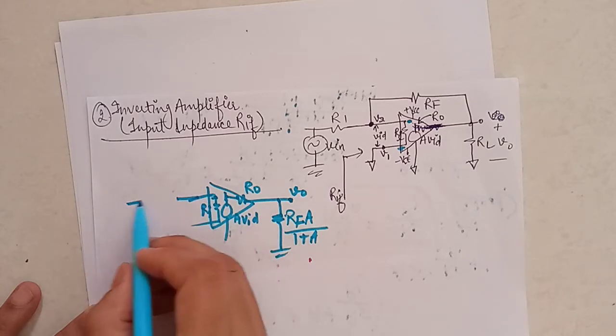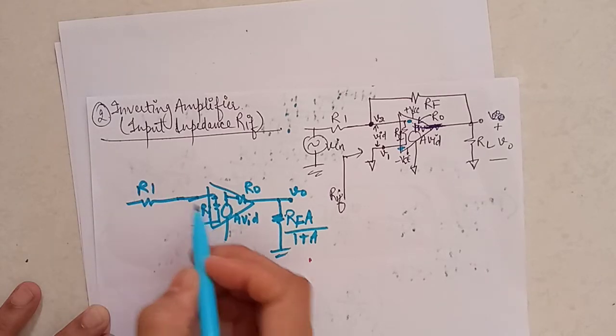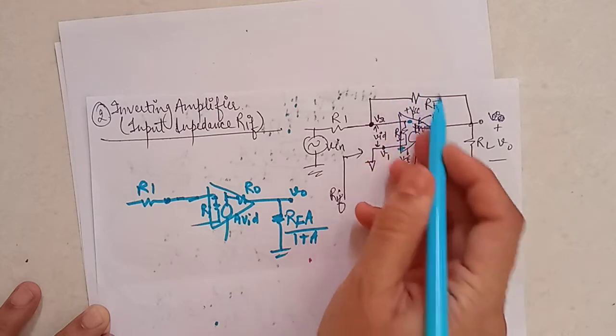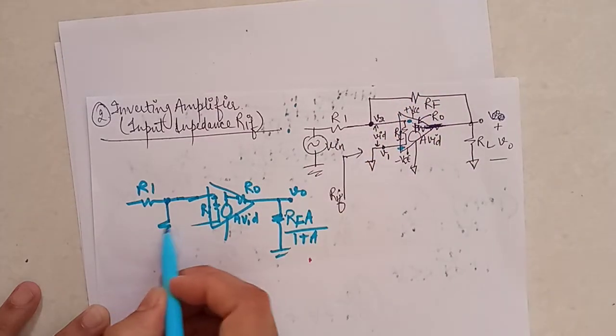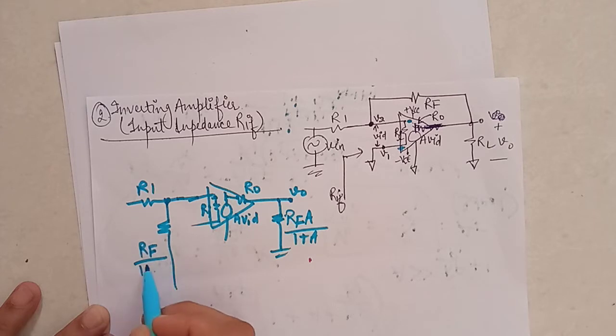Similarly, the input side resistance here is R1, and the input side resistance part which will come will be RF divided by 1 plus a. So RF times 1 plus 1 divided by 1 plus a will be the term.